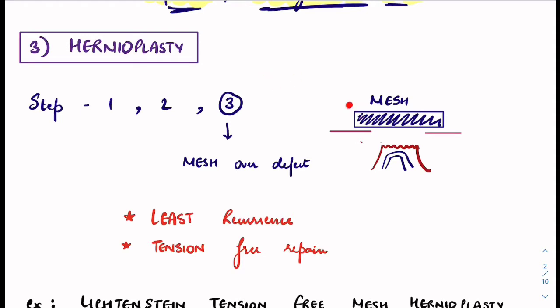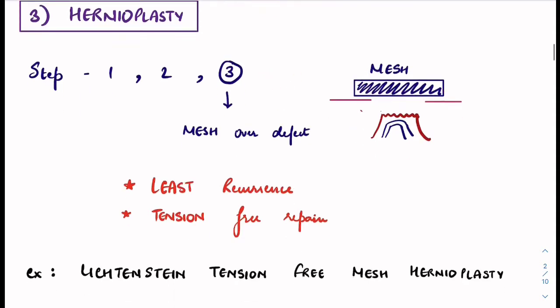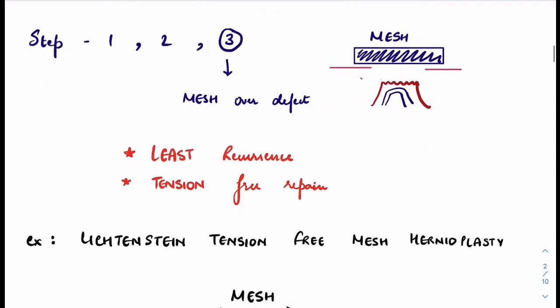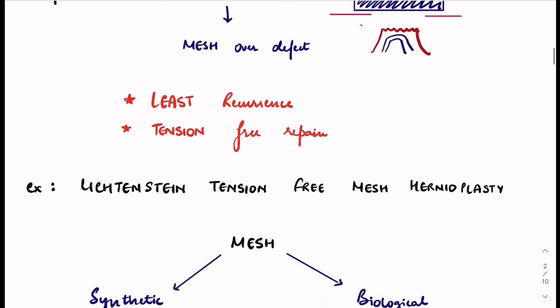The third method is hernioplasty. The first and second steps are the same as before, but in the third step, instead of suturing, you place a mesh over the defect. The mesh covers the defect without creating tension, so it has the least recurrence rate. It is called tension-free repair. Example is Lichtenstein tension-free mesh hernioplasty, used in inguinal hernia.